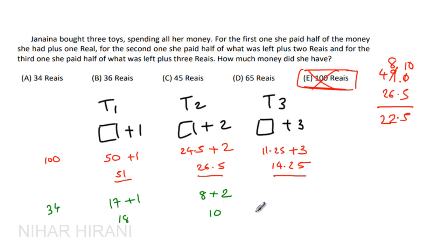Now after spending 18 plus 10, that's 28, leftover money is 6. What is half of 6? 3 plus 3 more, that is 6. If you add these 3, do you get 34?